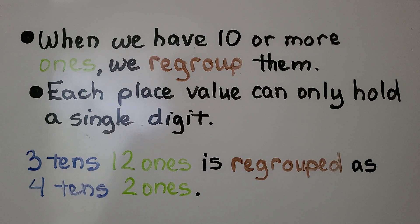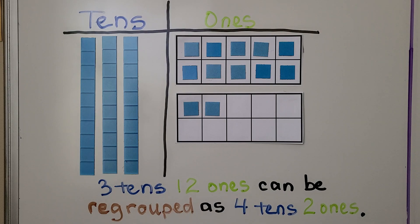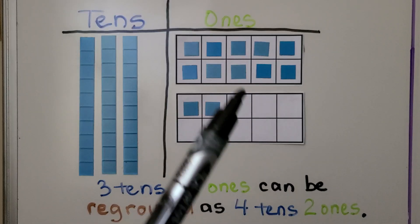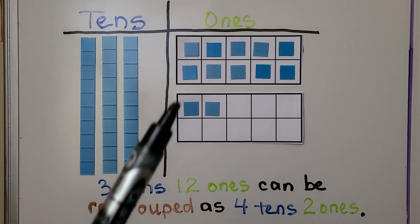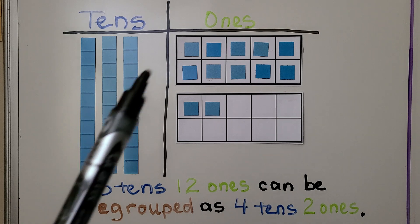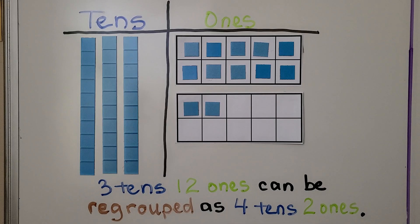We have three tens, twelve ones. It's regrouped as four tens, two ones. Three tens, twelve ones can be regrouped as four tens - one, two, three, four tens - two ones.